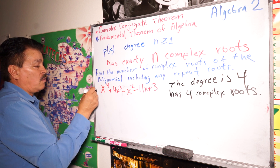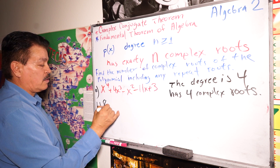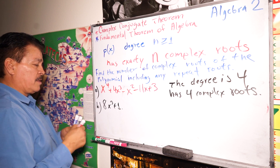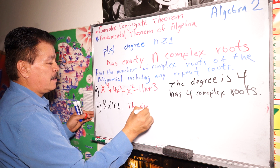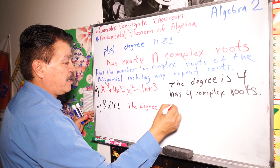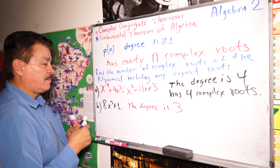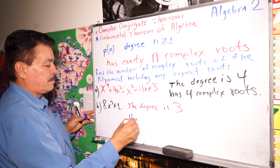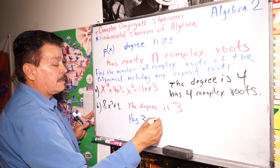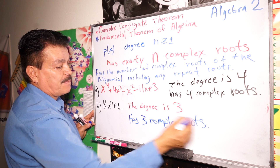Let's do another example: 8x cubed plus 1. The degree of this polynomial is three. Therefore, this polynomial has three complex roots.